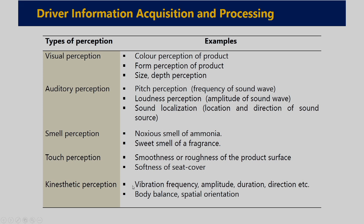There is also kinaesthetic perception — for example, vibration frequency, amplitude, duration, direction; body balance; and spatial orientation of defined body parts. This information is sensed by kinaesthetic sensors and ultimately reaches the brain for kinaesthetic perception.